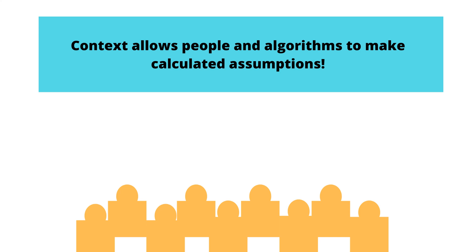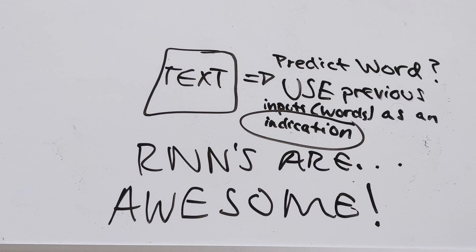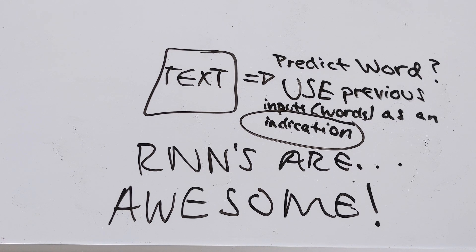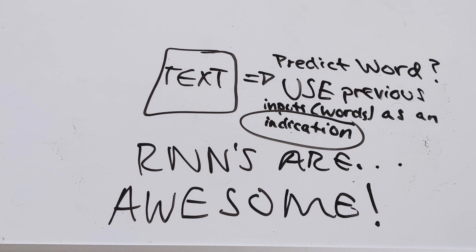So recurrent neural networks are kind of the same way. So we take a text, and to predict a word, we use previous inputs. Words is an indication of what the new predicted word is going to be. And that's how RNNs use previous knowledge, short-term and long-term memories, to be able to make those types of predictions. And that's why RNNs are awesome.